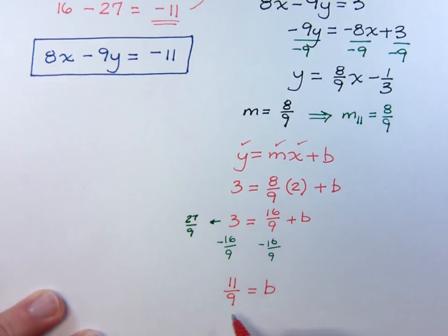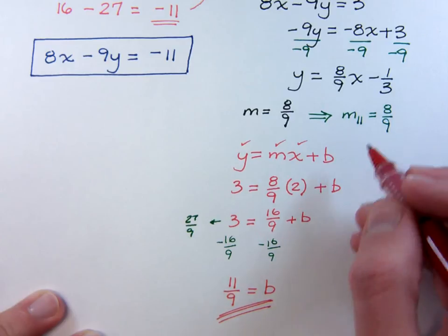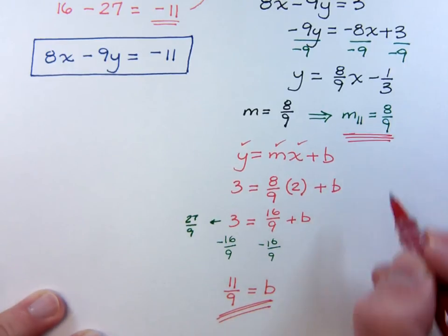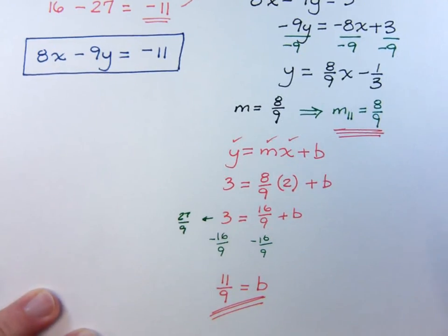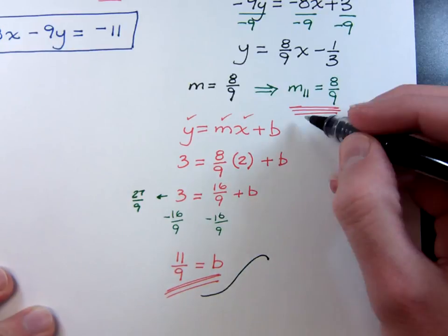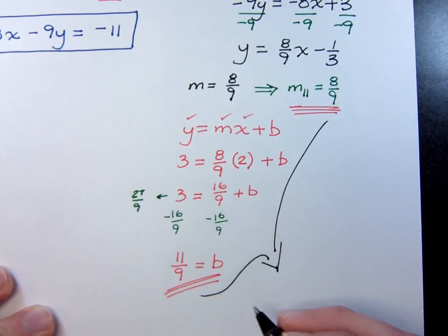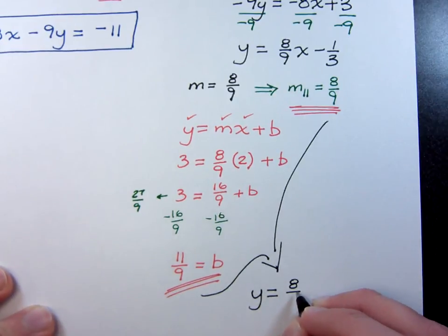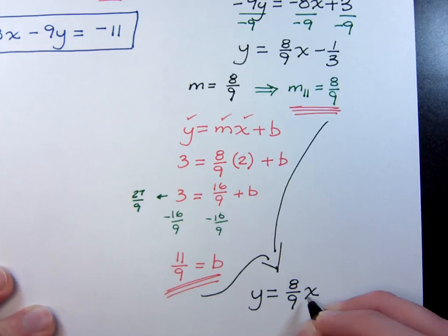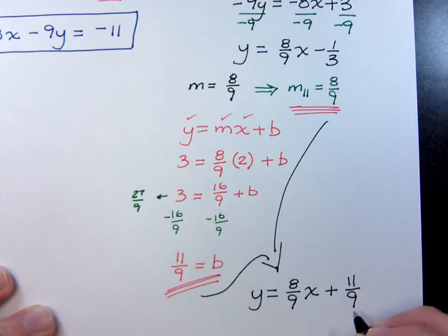Take your y coordinate for the y intercept, take your slope, and then together, this will give you your equation. y equals 8 9ths x plus 11 over 9.